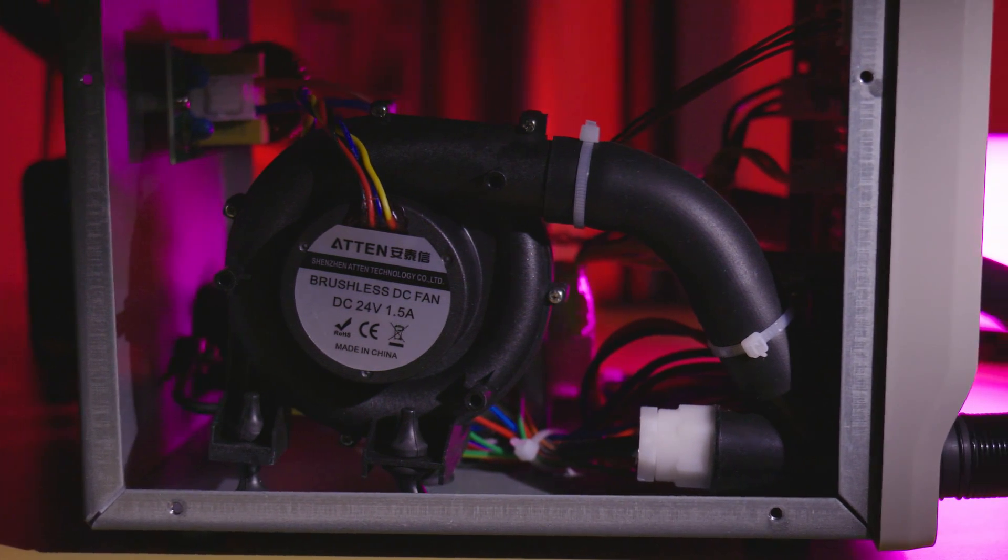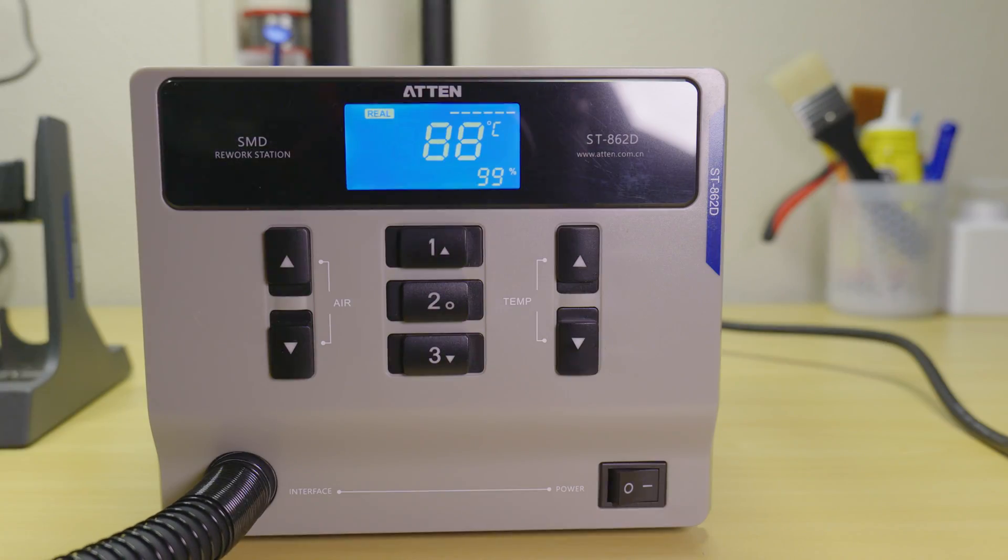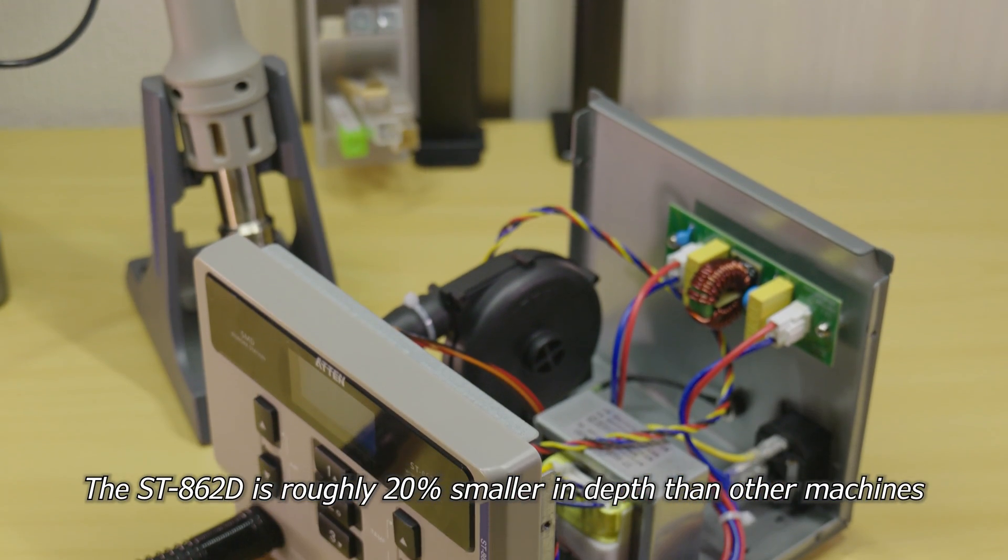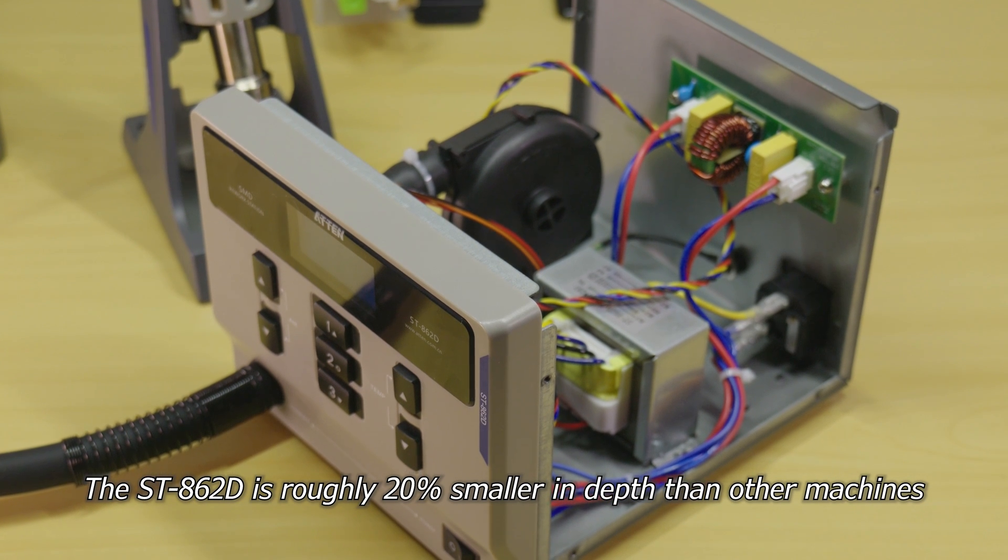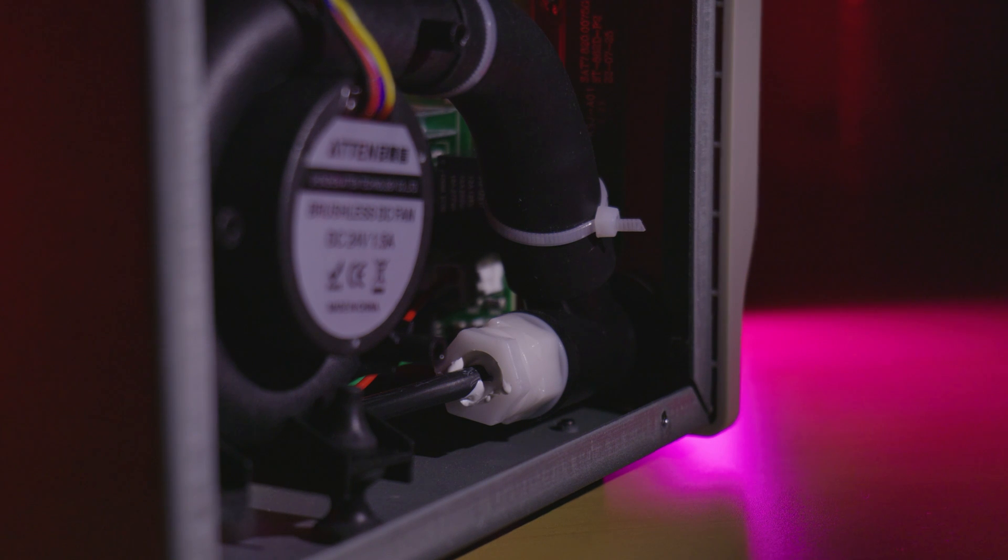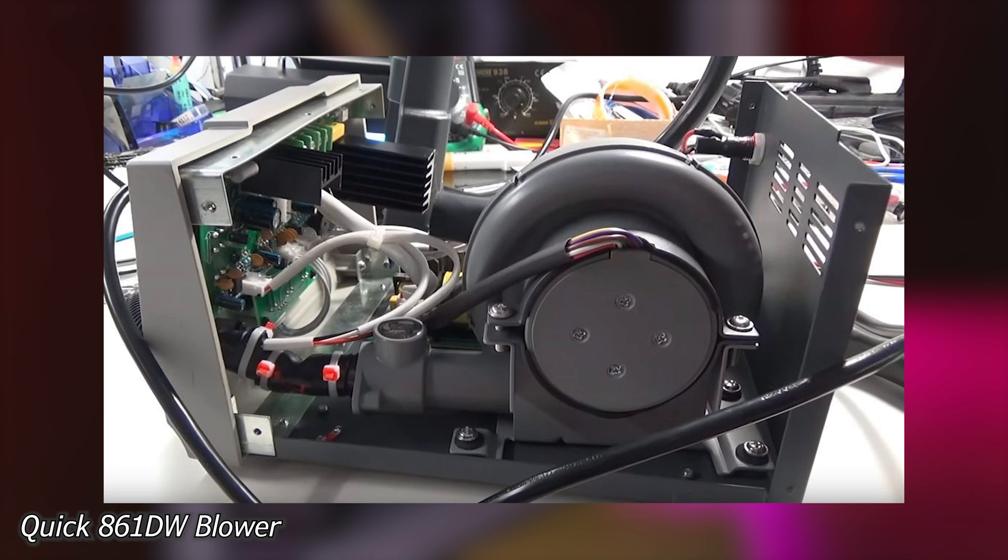While we are on the subject of blower fans, sadly the ATEN's blower is a little louder than other stations in its class. This is down to the ATEN's main unit having a smaller design envelope. In order to accommodate the smaller housing whilst simultaneously maintaining the same air volume, a higher RPM fan with a smaller blower housing was chosen. As a result, the station is noticeably louder than other stations and has a higher pitch sound.